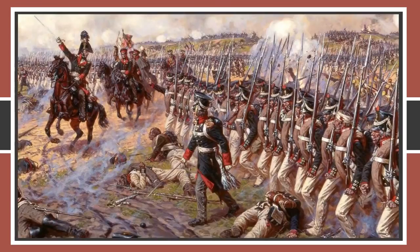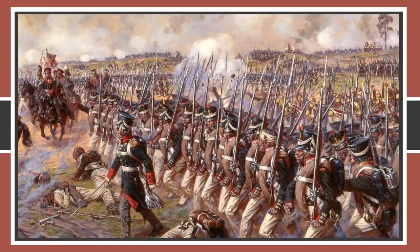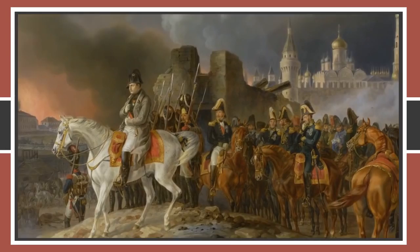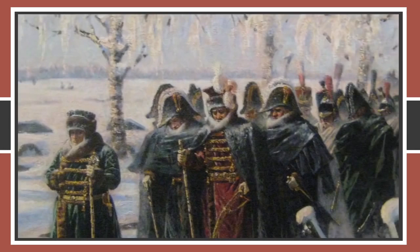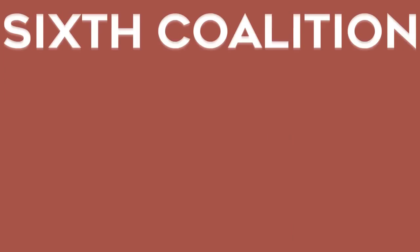Napoleon reached Moscow and it was burning. His forces entered the barren city and waited for a Russian surrender that would never come. His army retreated in the Russian winter on the same path they came, and many of his soldiers died in the snow. The Russians pursued Napoleon's armies, and other nations saw this as a chance to rise up.